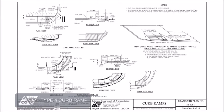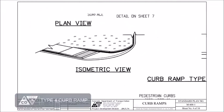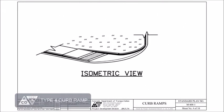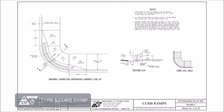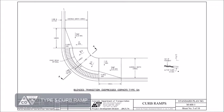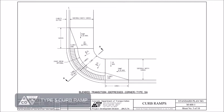Type 4 is often used on wide pedestrian access routes. Type 5 is also commonly referred to as a blended transition and should primarily be used in high pedestrian traffic areas and shared use paths.